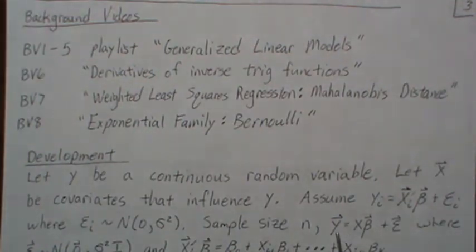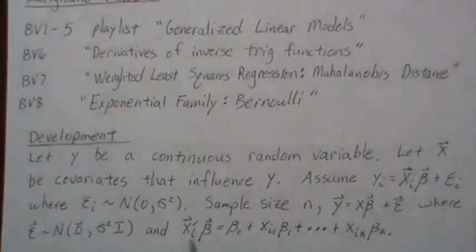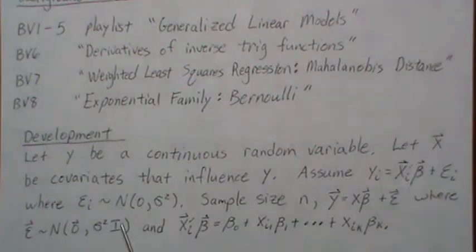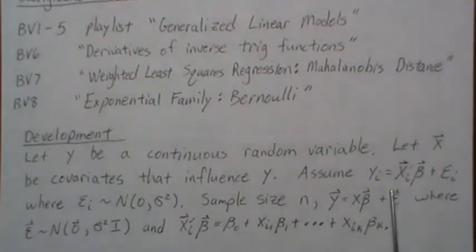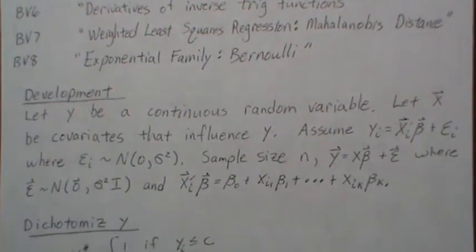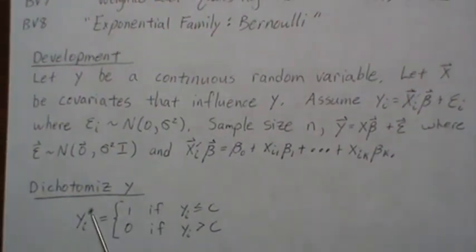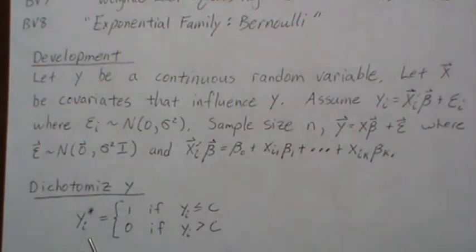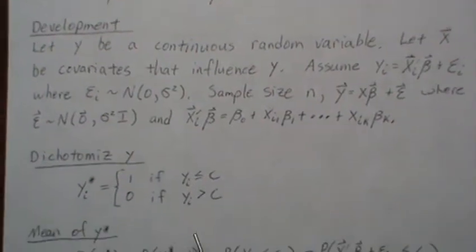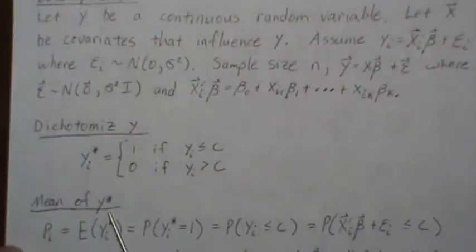Assume Y equals this linear combination X'β plus some error term, where the error is normal with mean 0 and variance σ². If we take a sample size n, then we can represent it in vector or matrix notation, where epsilon would be multivariate normal with the 0 mean vector and σ²I. Now, we dichotomize Y.